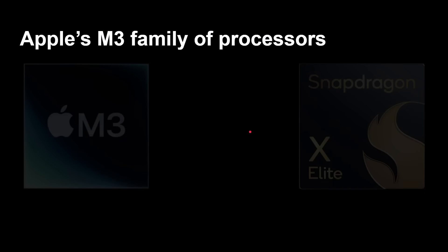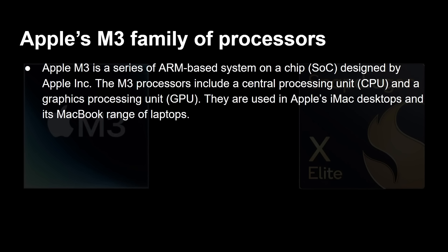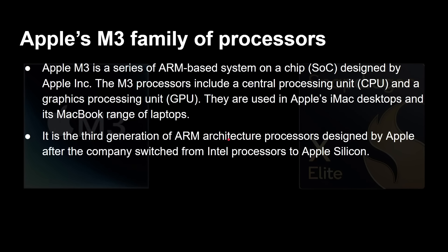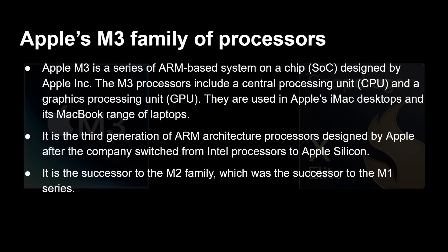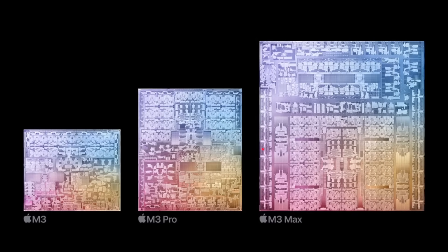Let's look at Apple's M3 family — a series of ARM-based system-on-a-chip designs by Apple. The M3 processor includes a CPU and a GPU and they are used in Apple's iMac desktops and MacBook range of laptops, and some iPads as well, though not M3 yet. The M3 is specifically the third generation of Apple's ARM architecture processors since the company switched away from Intel, succeeding the M2, which succeeded the M1 launched in 2020. Here's what they look like in the die shots.